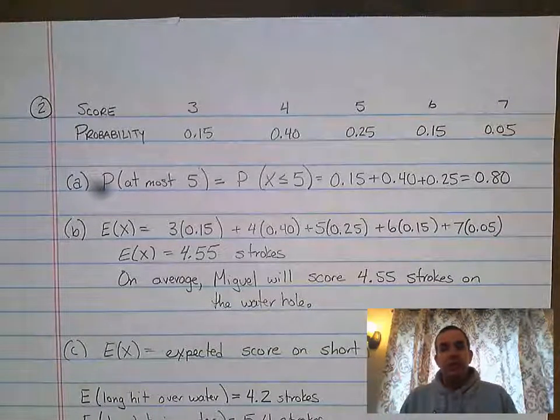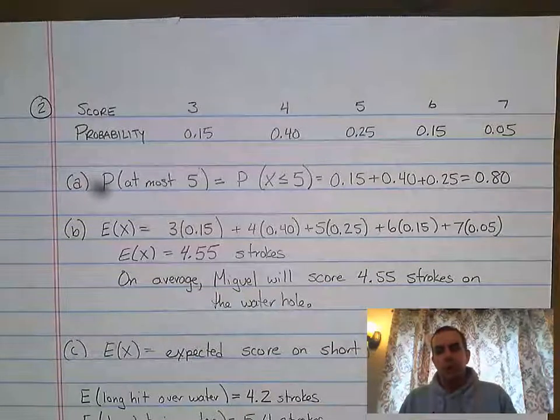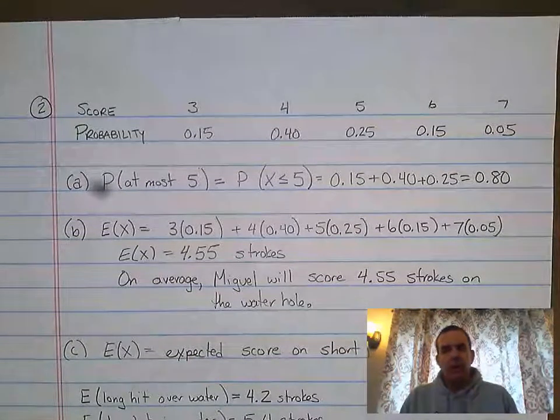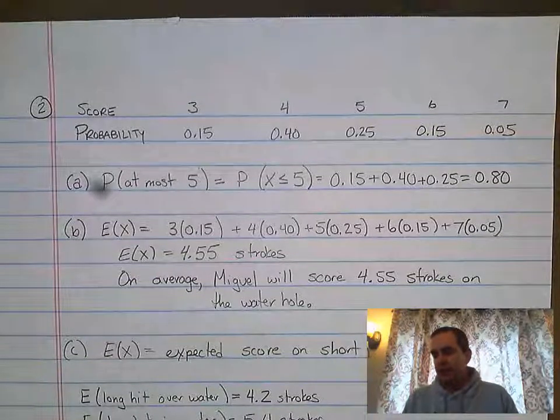We're moving on to the progress check unit 4 number 2, and this has to do a lot with expected value and reading a table. This is a really good question, it's really chock full of information.